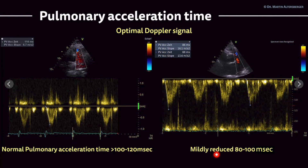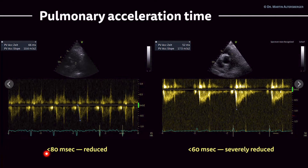On the other hand, you see here a reduced pulmonary acceleration time — here it is between 80 to 100 milliseconds, approximately 87 milliseconds. When you have this kind of measurement, it's definitely reduced. This gives you the information that pulmonary hypertension can be present. If it is more reduced, below 80 milliseconds, it's definitely reduced — we see here 66 milliseconds. And here it is below 60 milliseconds and is severely reduced. The lower and shorter the pulmonary acceleration time is, the more likely it is that pulmonary hypertension is present.